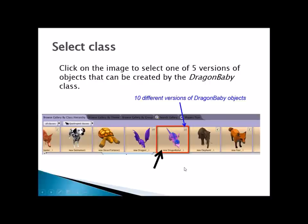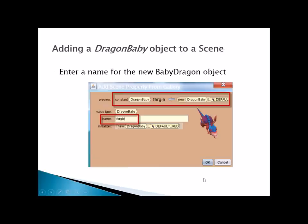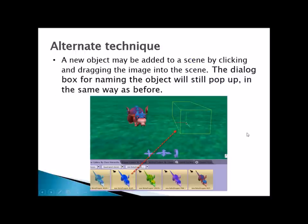Select the one that you want and give it a name. You have constructed a new instance of the baby dragon class — we say you have an instance of the class, and that's the object. Another way to get a new object is to drag it directly. You'll still get the dialog box for naming the object, so you can give it a name either way.